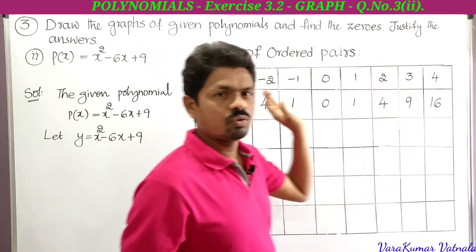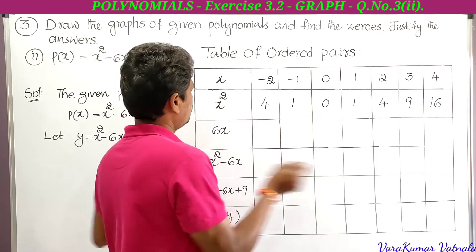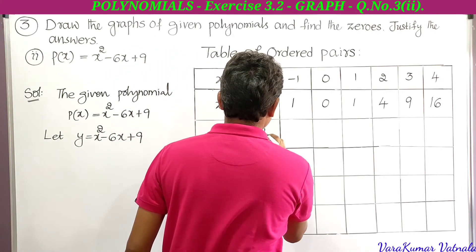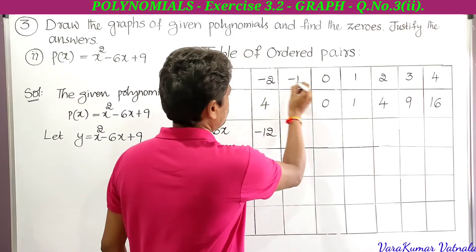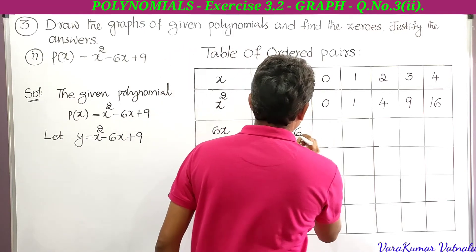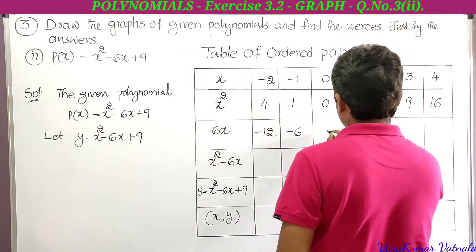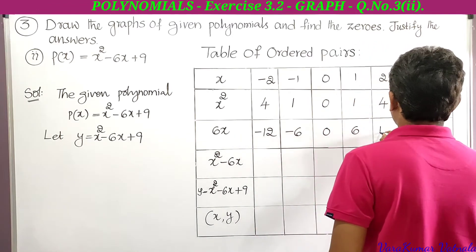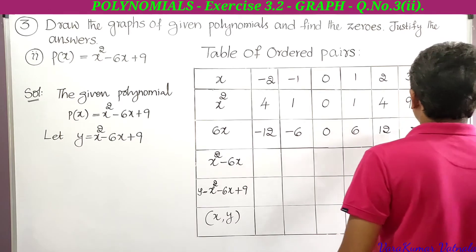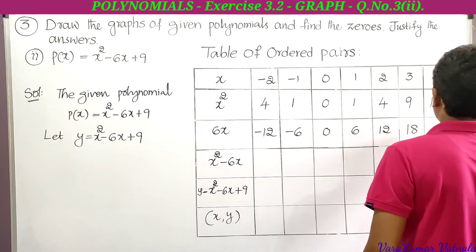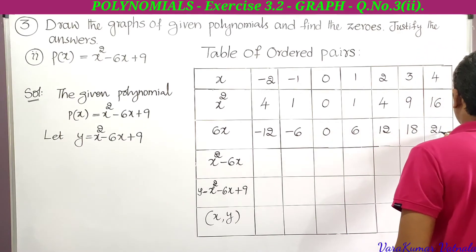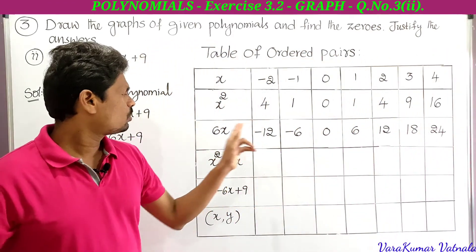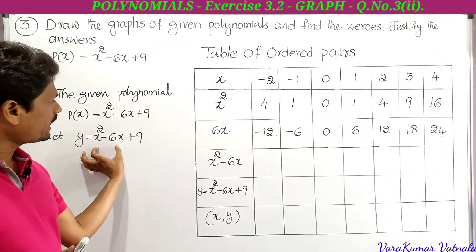Computing 6x: 6 × (-2) = -12, 6 × (-1) = -6, 6 × 0 = 0, 6 × 1 = 6, 6 × 2 = 12, 6 × 3 = 18, 6 × 4 = 24. These are the 6x values.